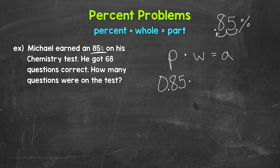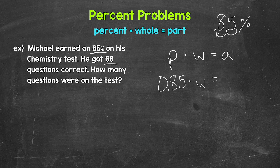So we plug in 0.85 for our percent; the whole equals the part. We need to figure out the whole and the part. We have 68 questions correct — that's the part of the test Michael got correct. What we don't know is the whole amount, the total number of questions on the test. So the whole is unknown, and the part is 68. Essentially, we're finding: 85% of what equals 68?